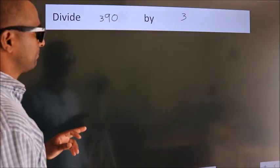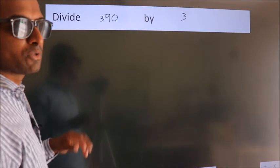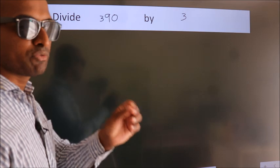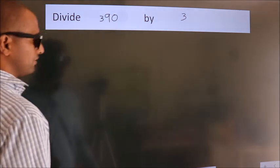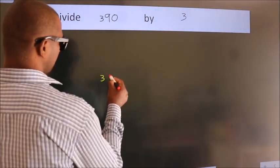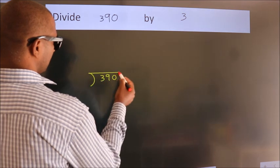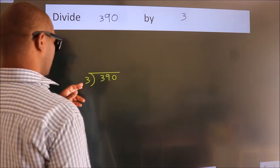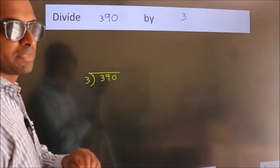Divide 390 by 3. To do this division, we should frame it in this way. 390 here, 3 here. This is your step 1.